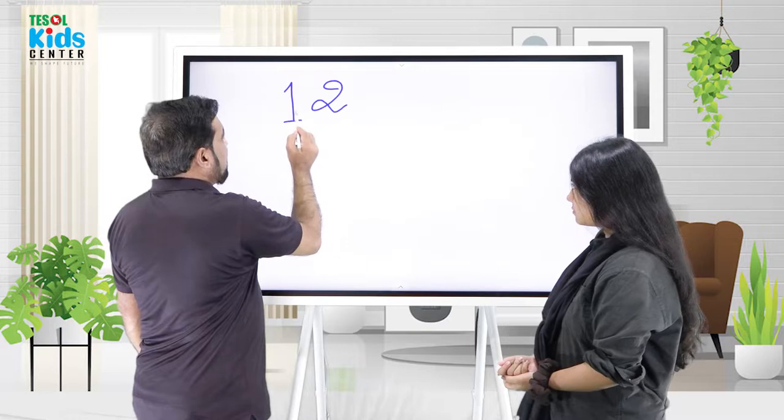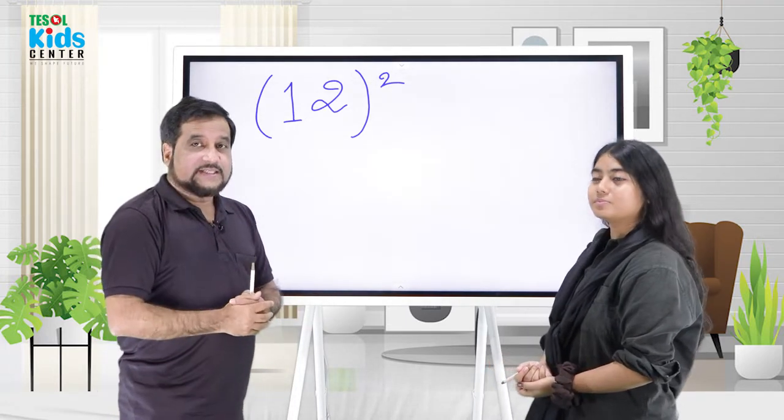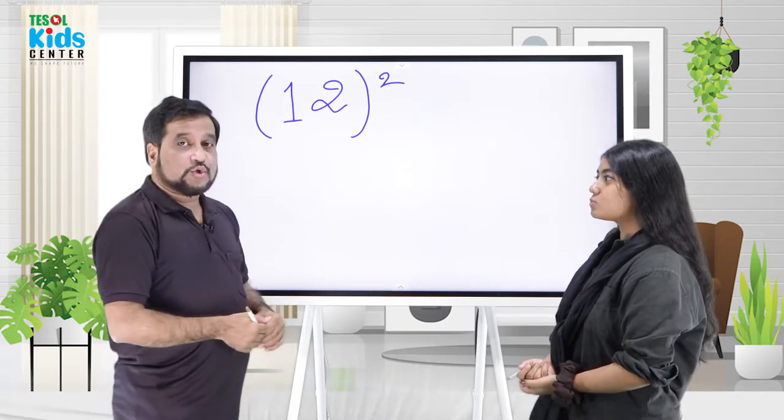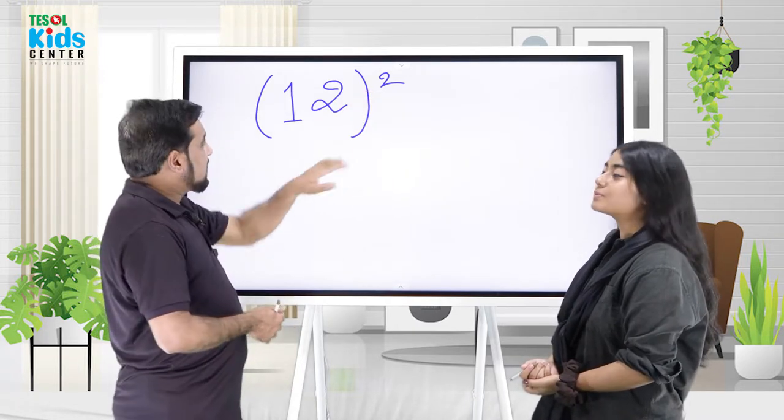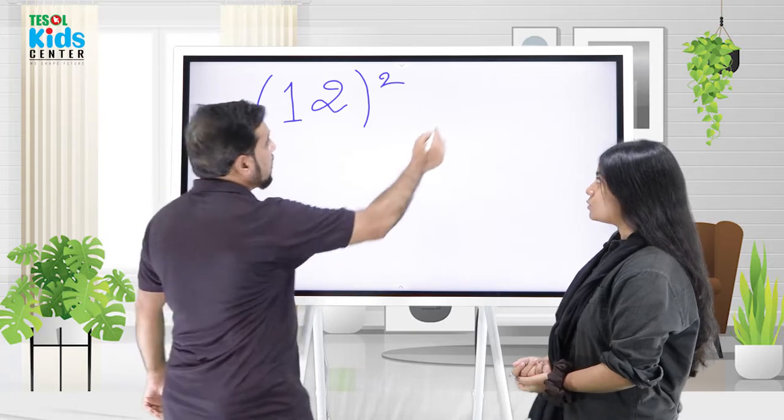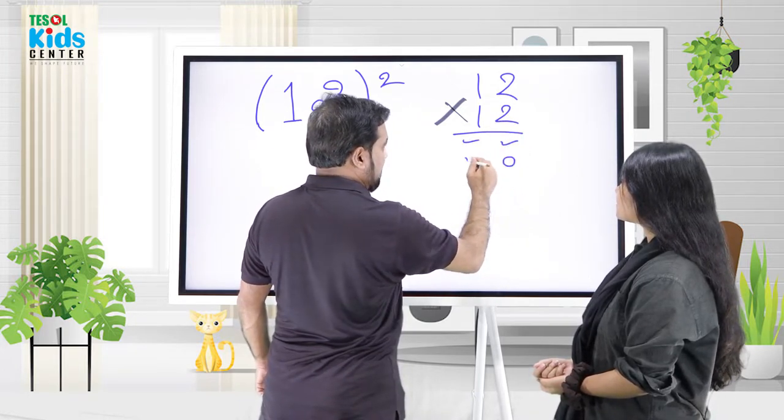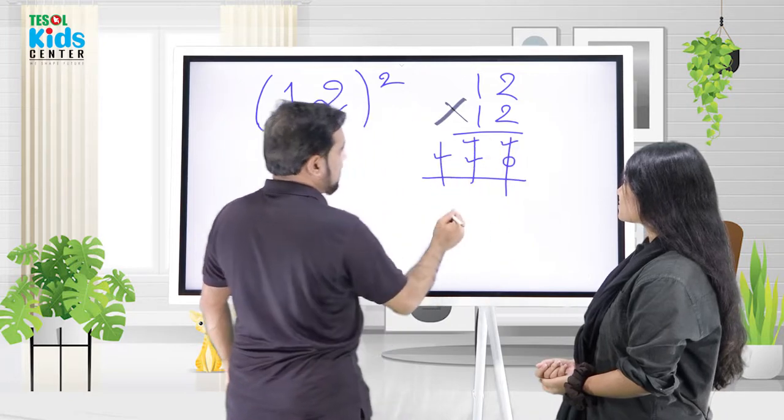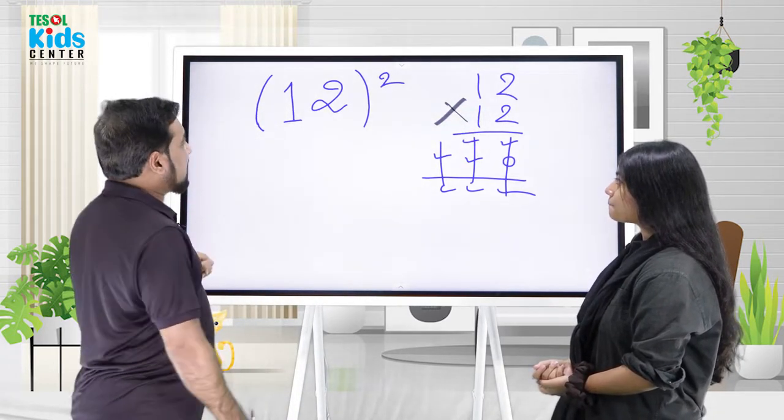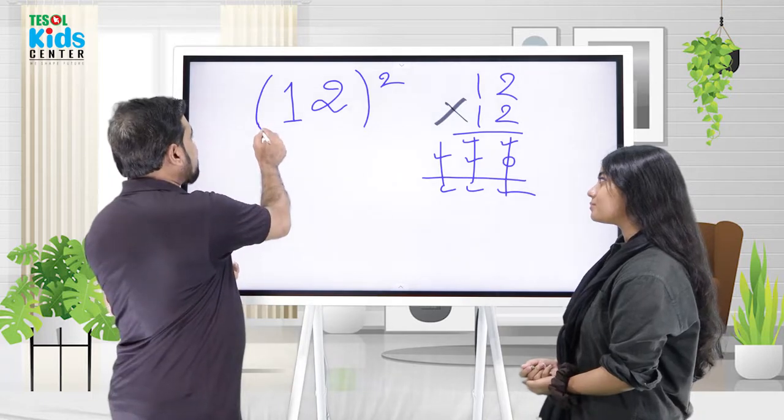Traditionally we do 12 squared either using a calculator or 12 times 12, then multiply digit by digit. It takes a lot of time and a lot of space, right? But there's a method. I'm going to show you how to do it mentally. It's really super easy to square a two-digit number.